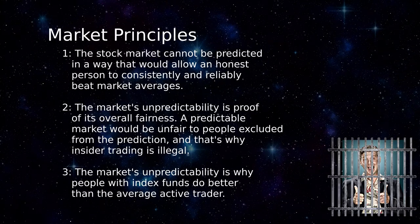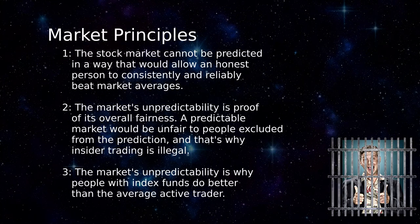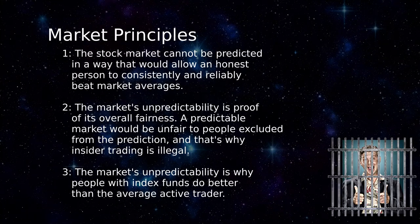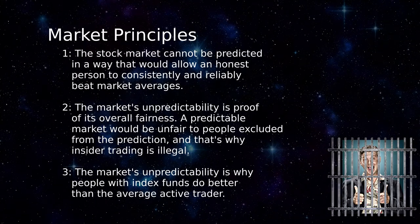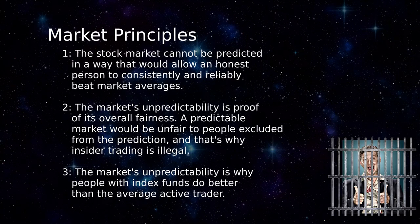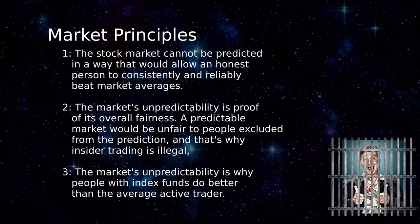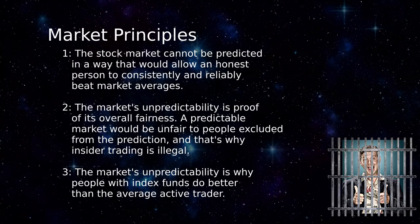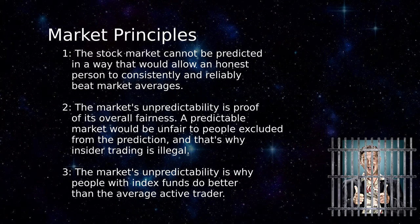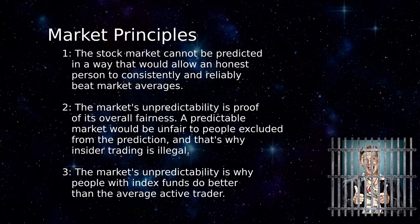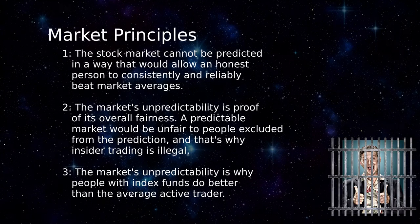Point two: the market's unpredictability is proof of its overall fairness — a predictable market would be unfair to people excluded from the prediction, and that's why insider trading is illegal. Point three: the market's unpredictability is why people with index funds do better than the average active trader.